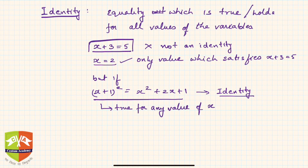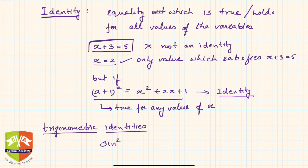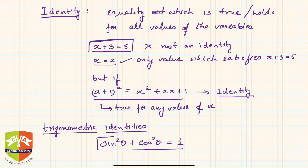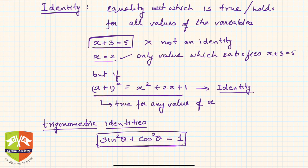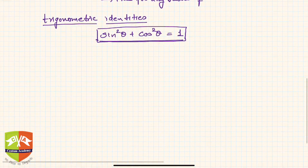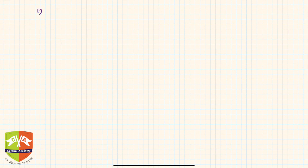We are going to concentrate on algebraic identities, but there can also be trigonometric identities. For example, sin²θ plus cos²θ equals 1, where θ is an angle — this is always true regardless of the value of θ, so it is a trigonometric identity. Here, however, we will focus only on algebraic identities, and let's do a quick recap of the identities covered in previous grades. It's always good practice to write these identities and keep them in front of your study table.